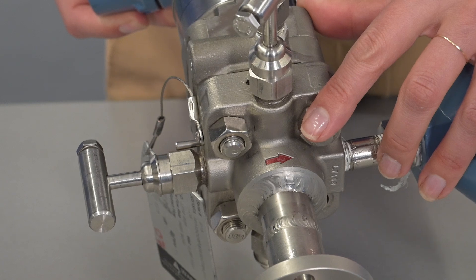Before inserting, locate the flow arrow on the primary element and ensure that this lines up with the direction of the pipe flow.